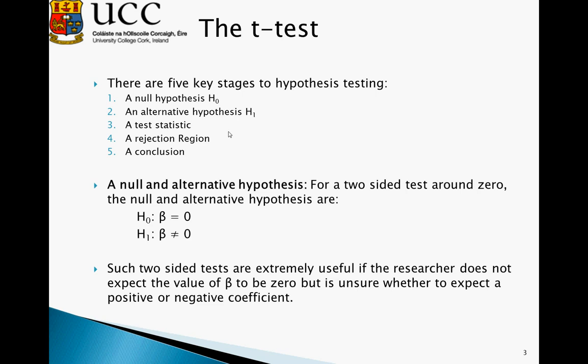Such two-sided tests are extremely useful if the researcher does not know what the expected coefficient of beta will be like. So we don't know whether it will be positive or negative, or if we're just interested in exploring whether it has a statistically significant impact on whatever a dependent variable is.